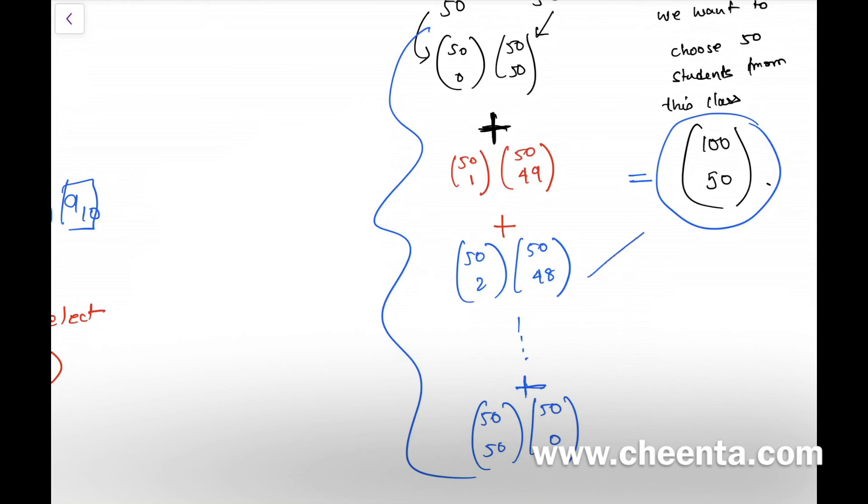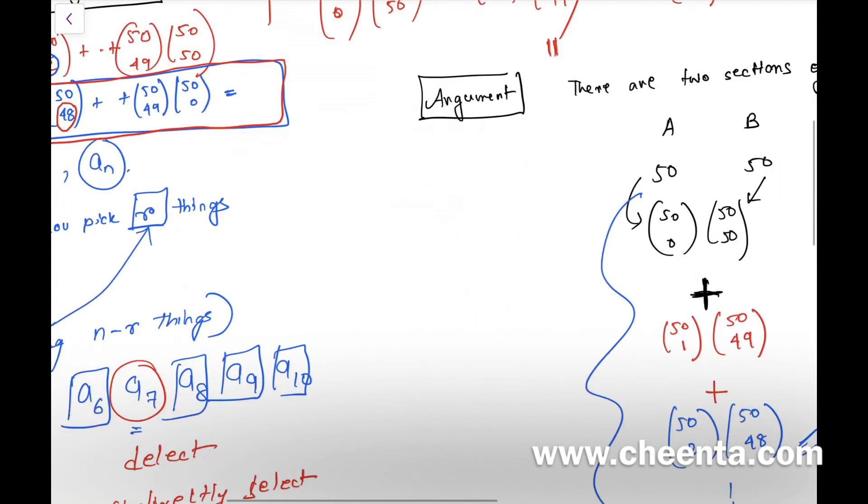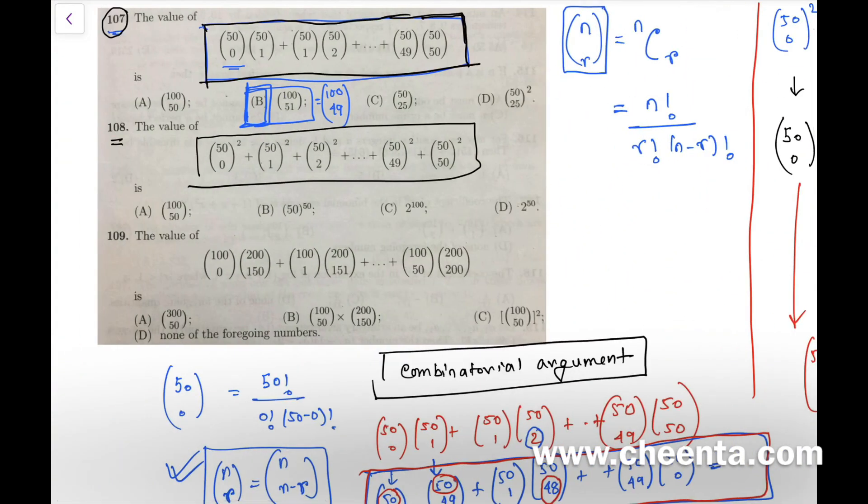So these two things must be equal. See, we just proved it using arguments—we didn't even use any particular fancy computation technique. So the answer should be (100 choose 50), which is option A. Thank you for watching. We will come back with the next video very soon.